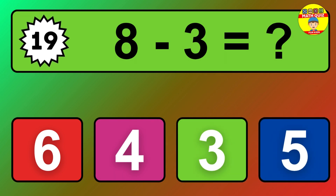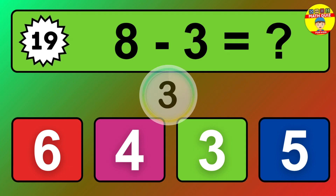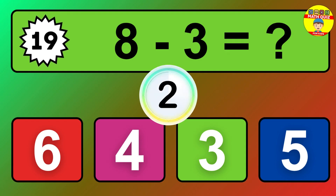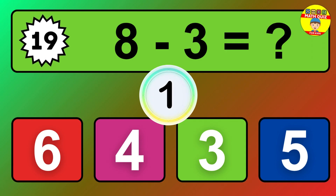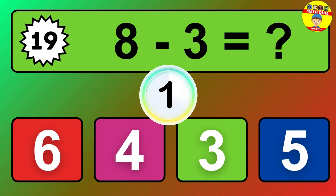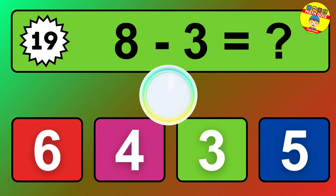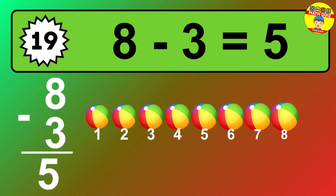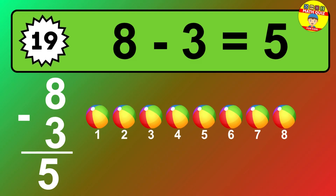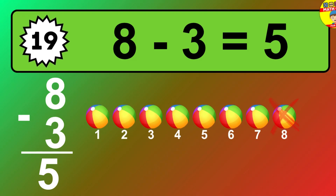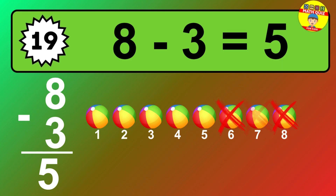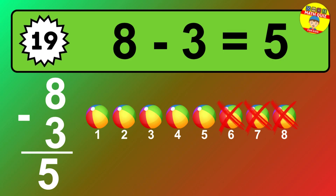Question nineteen: eight minus three equals what? So the answer is eight minus three is five. Let's count it: one, two, three, four, five.